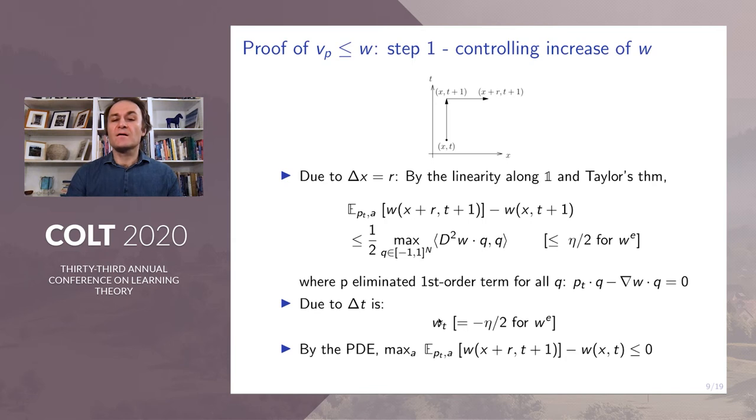The increase in w due to changes of x equal to the instantaneous regret has the expression here. By linearity of w along the vector of all ones and by Taylor's theorem, this increase is bounded by the maximum second derivative. For the exponential weights, the second derivative is bounded by eta over two. In this setting, the player eliminated the first order term for all q by its choice of the strategy.